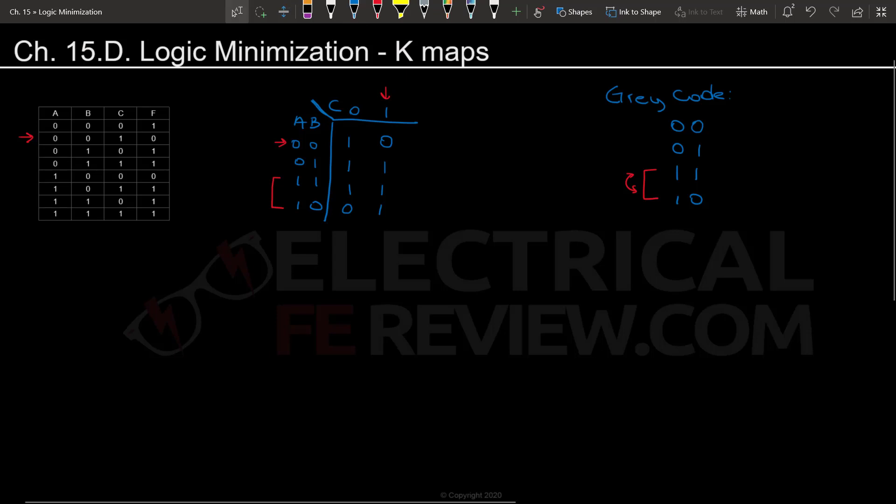So now that we have our kmap, we're going to have to see how we're going to group each of these ones so that we can create new simplified versions of our function. So the first thing to remember for kmap, we are going to be looking for groups of ones in the case of midterms.